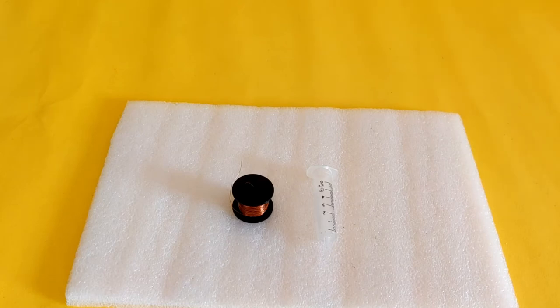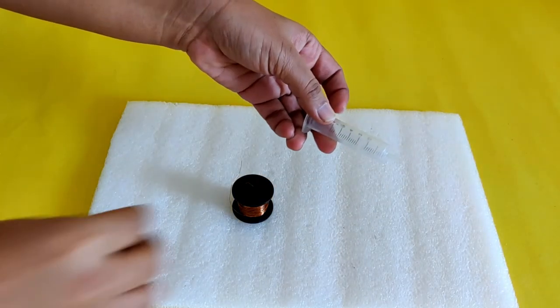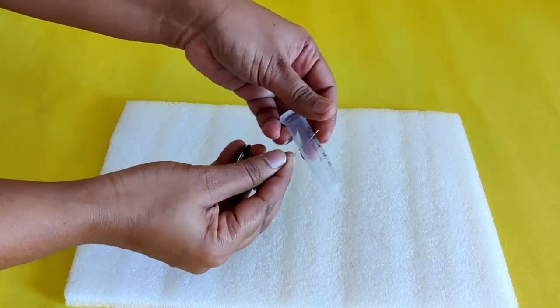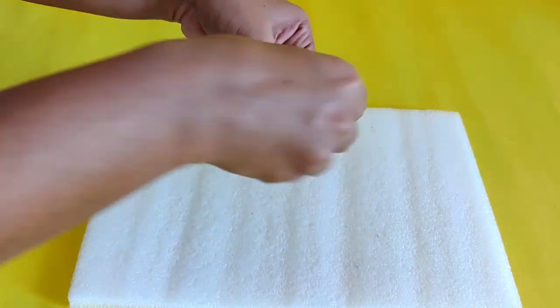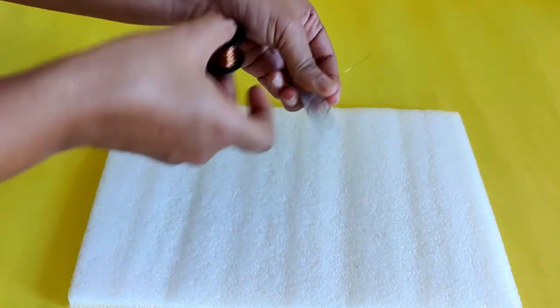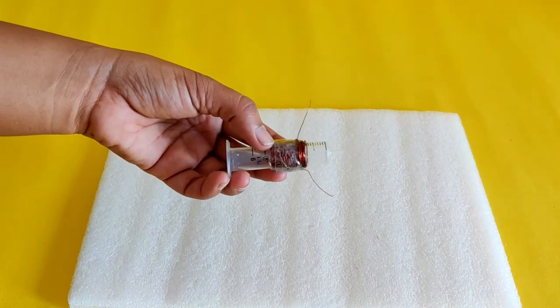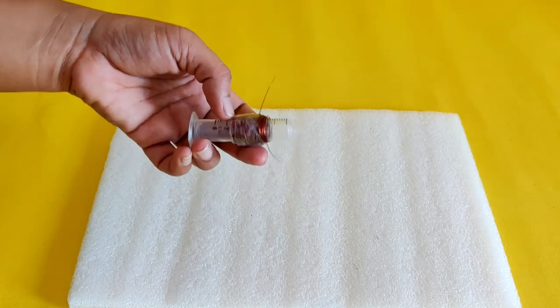In case this readymade setup is not available, to build it, remove the piston from the syringe and wind the copper wire around the syringe. Make about 400 turns, keeping the ends of the wire accessible. Secure the copper winding to the syringe with cello tape, so the winding does not come undone.